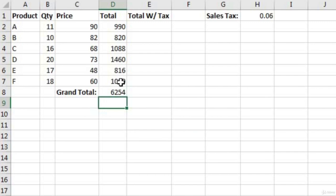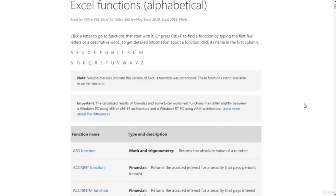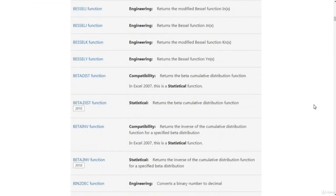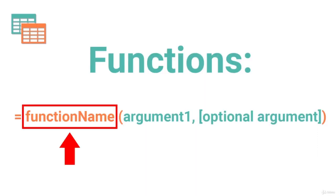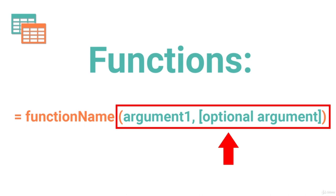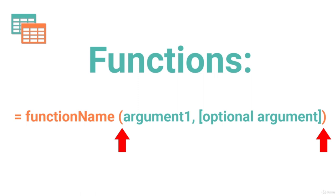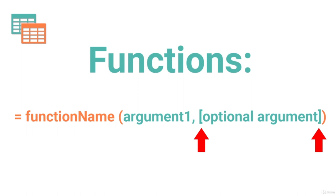One way to calculate the sum is to add up each value individually, which gives us 6,254. But what if you had a thousand rows? Luckily, Microsoft Excel has a built-in function called the SUM function. Microsoft Excel has a huge library of built-in functions. Each function consists of two parts: the function name and the function arguments. Arguments are enclosed by parentheses and separated by commas. Optional arguments are enclosed by brackets.